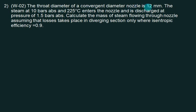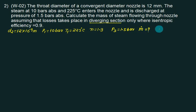Problem 2: The throat diameter of a convergent divergent nozzle is 12 mm. So write D2. The steam at 10 bar, P1 equals to 10 bar. Corresponding condition is 225°C. Then N equals to 1.3. Enters the nozzle and is discharged. Discharge is back pressure 1.5 bar. All pressures are always absolute. You want to calculate M dot, mass flow rate. Assuming that the loss occurs in divergent section only. What is the nozzle efficiency given to you? 90%.